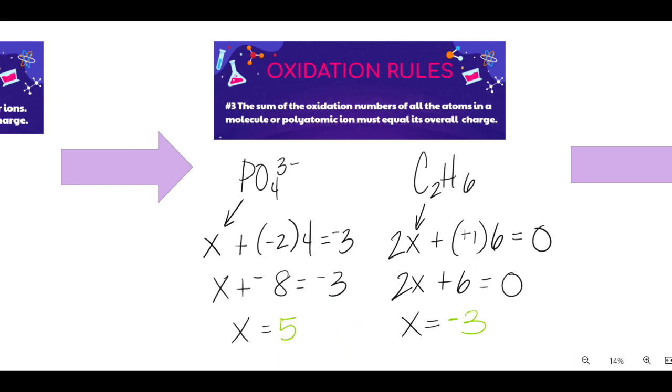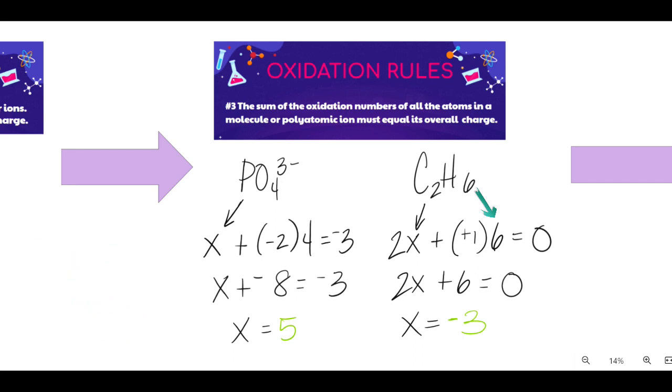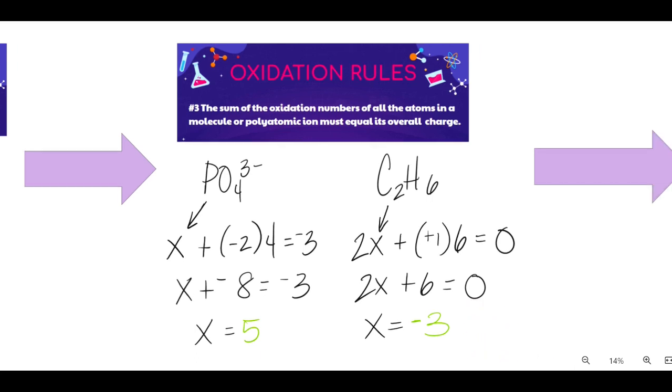On the right hand side, we have C2H6. Now the big difference here is that I set the algebraic expression equal to zero. Why? Because C2H6 doesn't have a charge. I multiply the X, which represents the oxidation number of carbon, by two because there's two carbons. Hydrogen has an oxidation number of plus one almost all the time. Again, you'll see that in rule number four. And I'm multiplying that by six because there's six hydrogens. Solving for X, I find that the oxidation state of carbon is negative three.